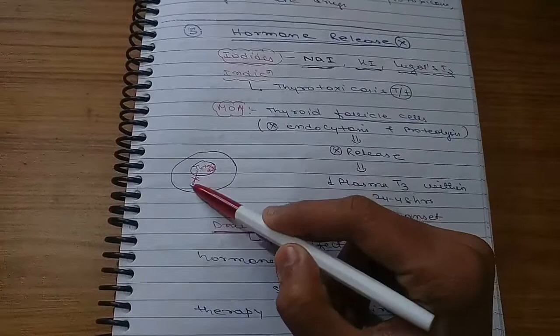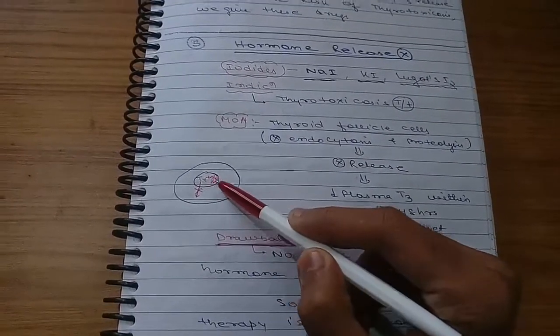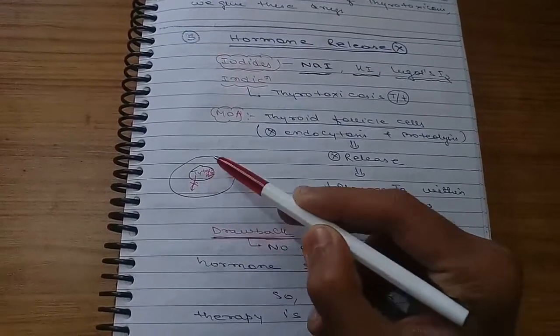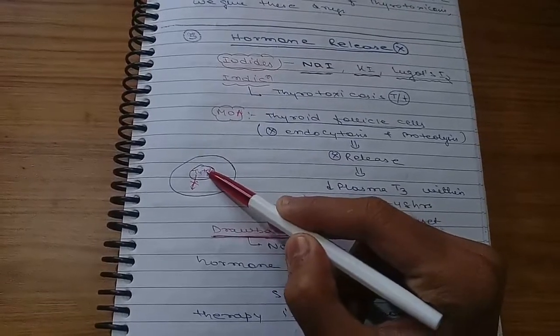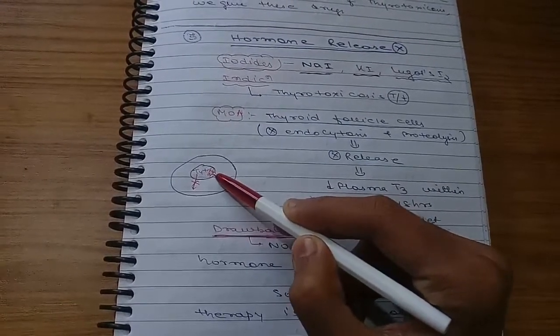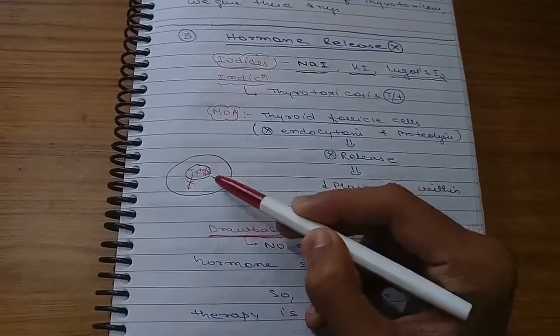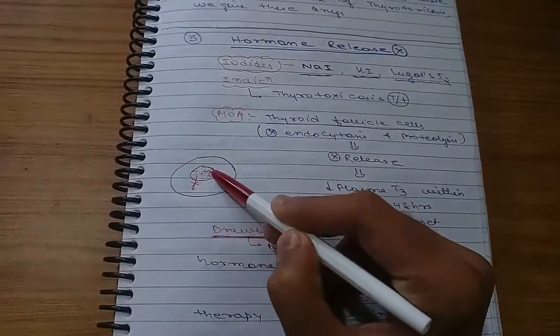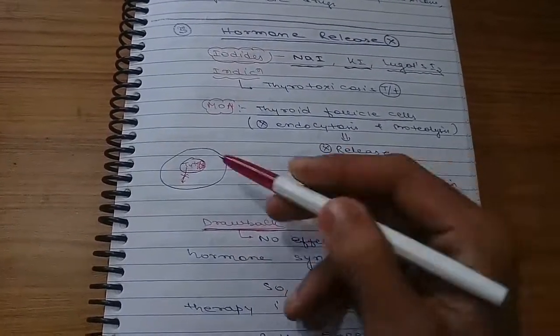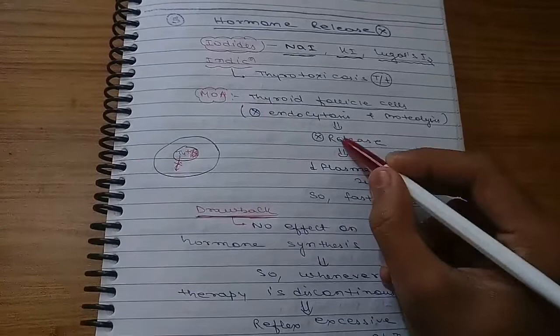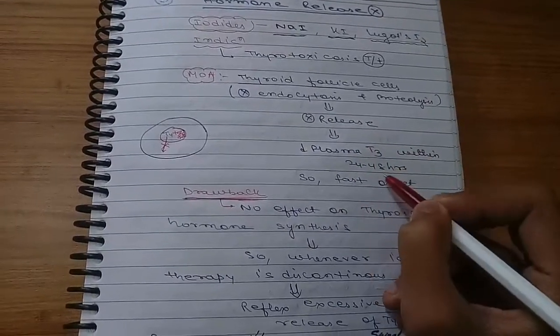T4 is taken up by cells and then released excessively. These hormone releasing inhibitors will inhibit the exocytosis of T4. T4 is combined with globulin, so proteolysis is needed for removing globulin. It also inhibits proteolysis so T4 is not freed from globulin.